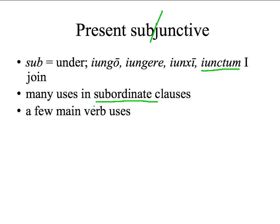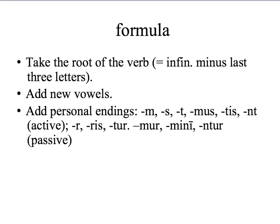We'll be learning a few subjunctives used as main verbs. But first, the formula for forming the present subjunctive: take the root of the verb — remember, the infinitive minus the last three letters — add new vowels, which we are going to learn, and then add the personal endings: M, S, T, MUS, TIS, NT. Those should look familiar.